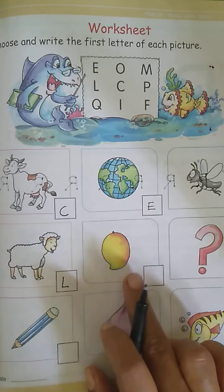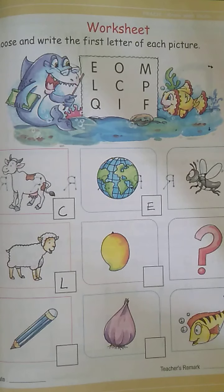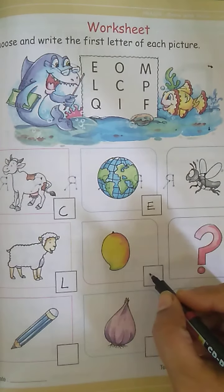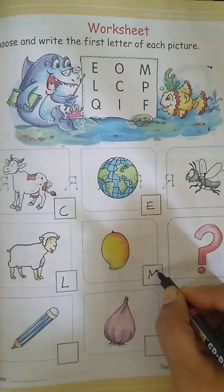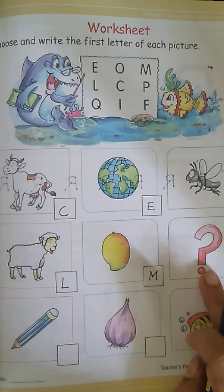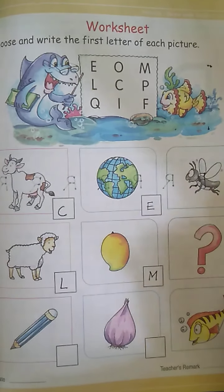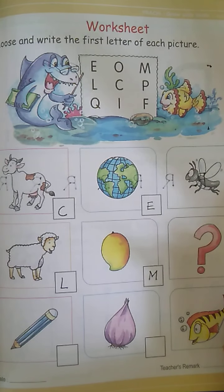Now, which fruit is this? It's the mango. What is the first letter for mango? M. So, let's write the letter M. And this is a question mark. What is the first letter for question mark? Q.